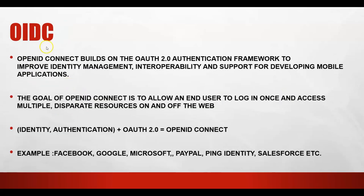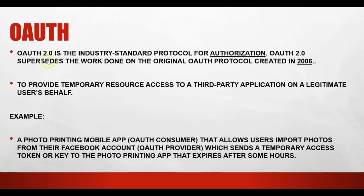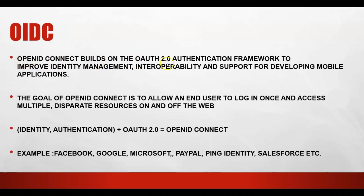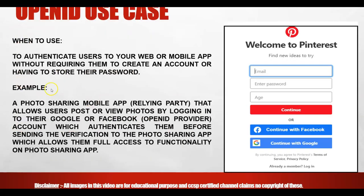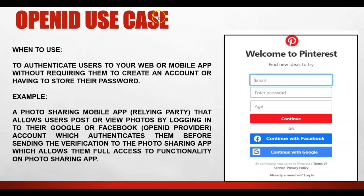Now we come to OIDC — OpenID Connect. OIDC is OAuth plus authentication, because OAuth itself had no authentication mechanism defined. OpenID Connect is built on top of OAuth to improve identity management interoperability and support mobile applications. The goal of OpenID Connect is to allow an end user to log in once and access multiple disparate resources on and off the web. A common example is social login — when you visit a website, you get the option to log in via Facebook, Google, or Microsoft.